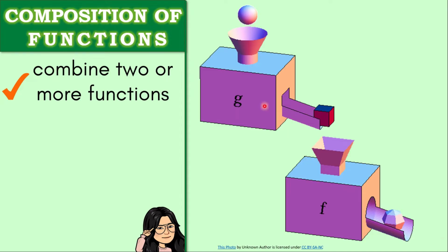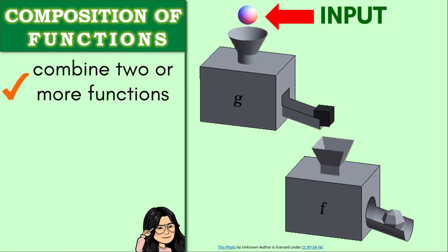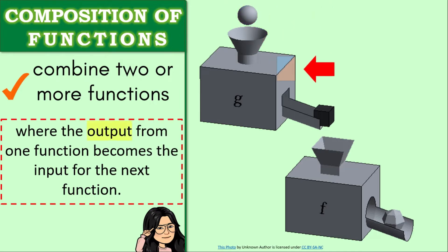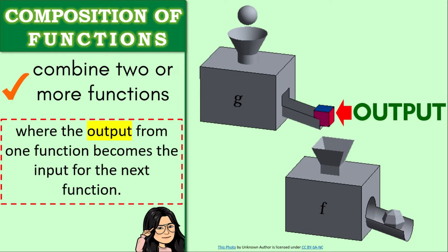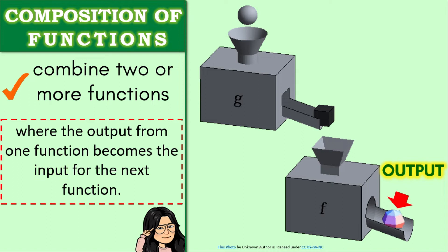As you've noticed, there are now two function machines — g of x and f of x — similar to what we discussed in the evaluation of functions. In composition of functions, we place the input into g of x to get an output. That output then serves as the input for the next function, f of x, giving us the final output. This is the composition of f of x and g of x.